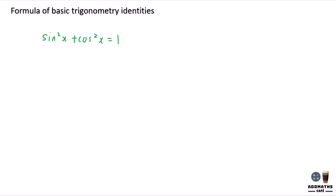Then the second formula: divide the whole equation by sin square x. This will give you 1 plus cos square x over sin square x equal to 1 over sin square x. At the end, this will give you 1 plus cot square x equal to cosec square x. So this will be your second formula.